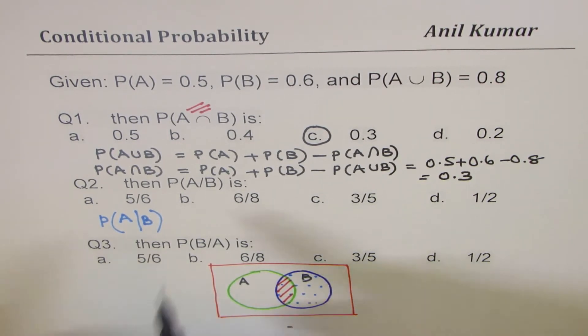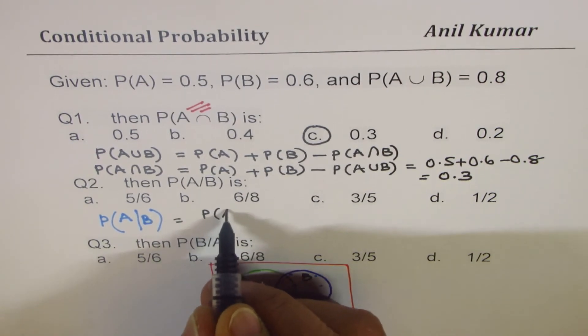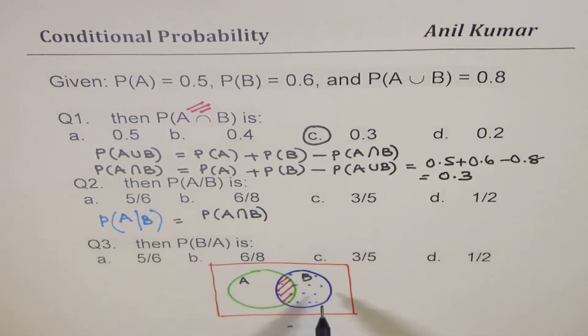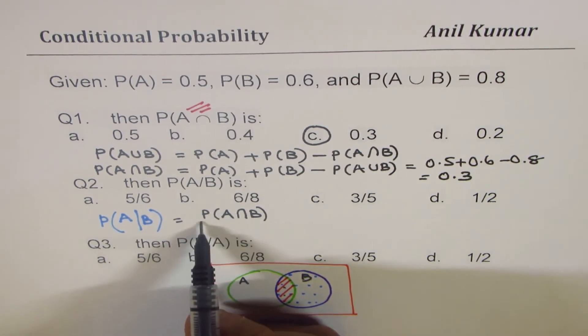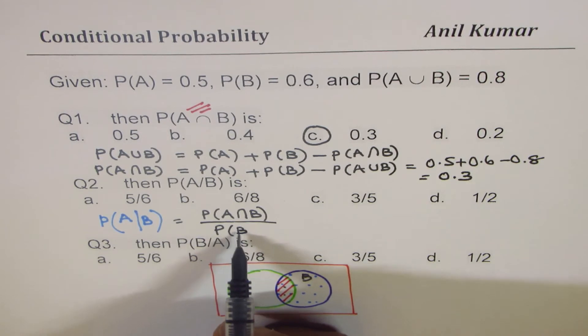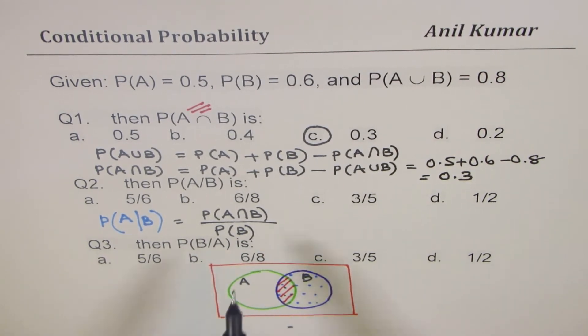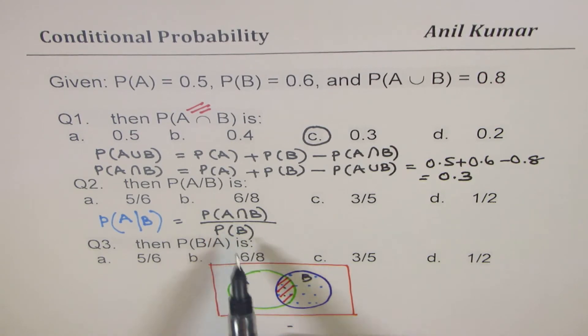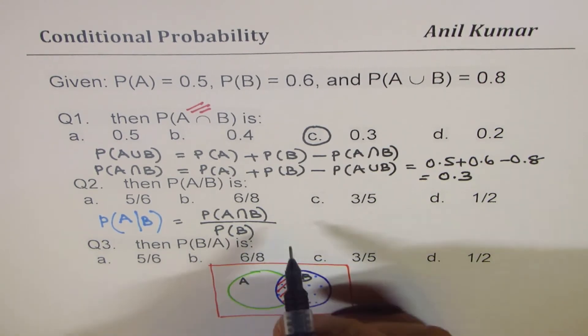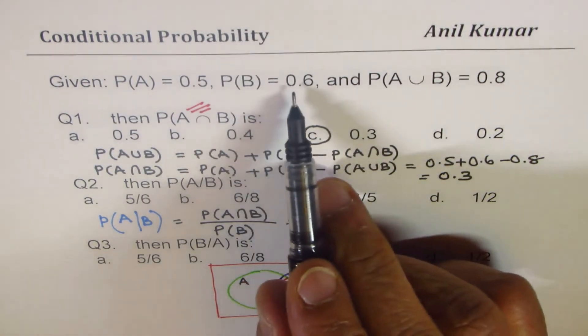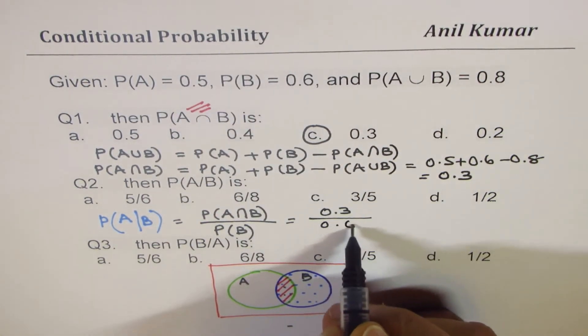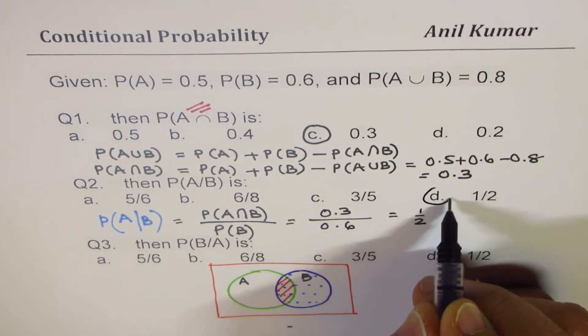And therefore this probability is given as probability of A intersection B. So when B has occurred what is the probability that A can happen. So that is this intersection over the probability of occurrence of B, does make sense. So without getting into the formulas or remembering them that makes common logic to get the solution. So intersection we just found as 0.3 and probability of B is given to us as 0.6. So this is half, so option D is the right option.